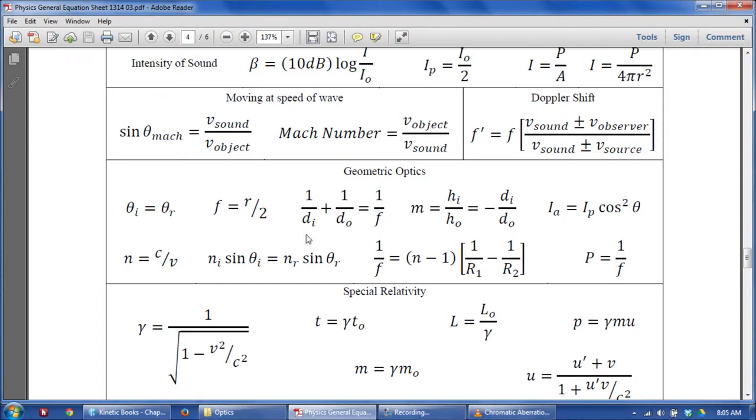So, let's take a minute and look at the equations. We have our same relationship between distance of the image, distance of the object, and the focal length. We have our same relationship with magnification here. We do have a couple new equations, one of them being the power of the lens.